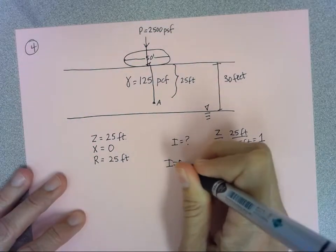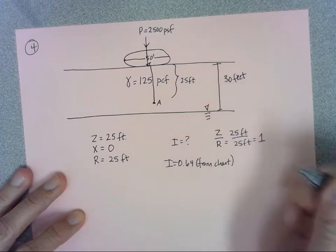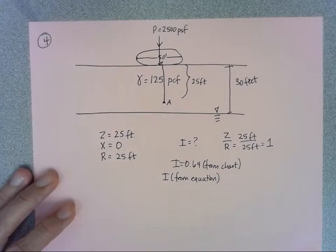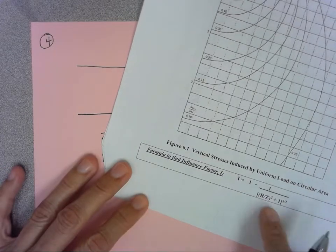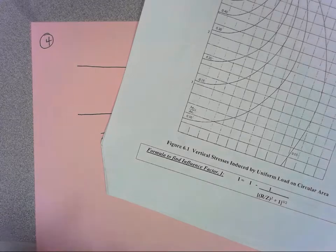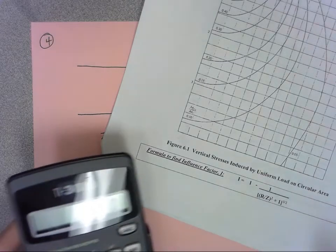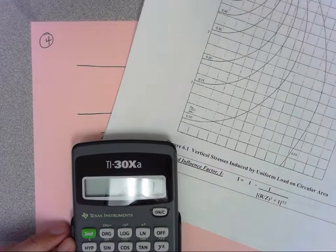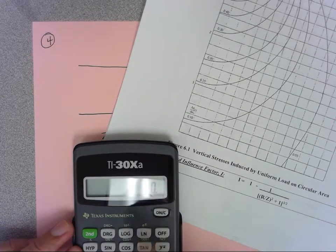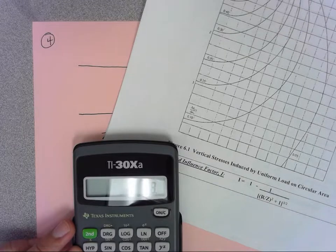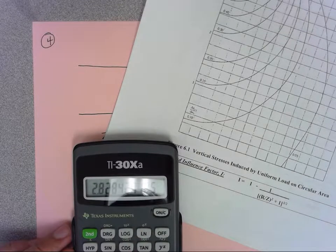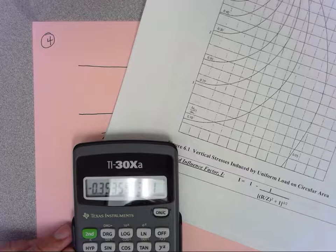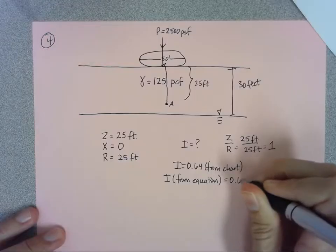From this chart maybe I would say 0.64, but I'm also going to use the equation to check it. When I use the equation, remember this is at the bottom of the page and this is optional, you can just use the chart. Here I plug in R over Z but that's just 1 also, so it's 1 squared which is 1 plus 1. This denominator I'm going to cube, so 1 plus 1, then I cube that, that's 8, take the square root of it, do 1 over that and then subtract that from 1, and I get 0.65.